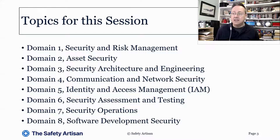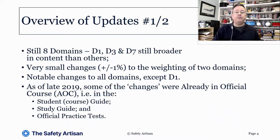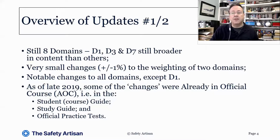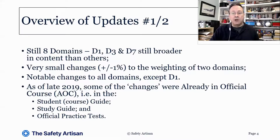In the new version of the syllabus, there are still eight domains, and overall those domains haven't really changed. Domains one, three, and seven are still broader than the others. The weighting between the different domains in the exam has only changed slightly — one domain has gone down 1% and another has increased by 1%. But there have been significant changes to all of those domains except number one. There's a small change to number one, as we will see, but it's not huge. Domains two to seven have all undergone significant changes.